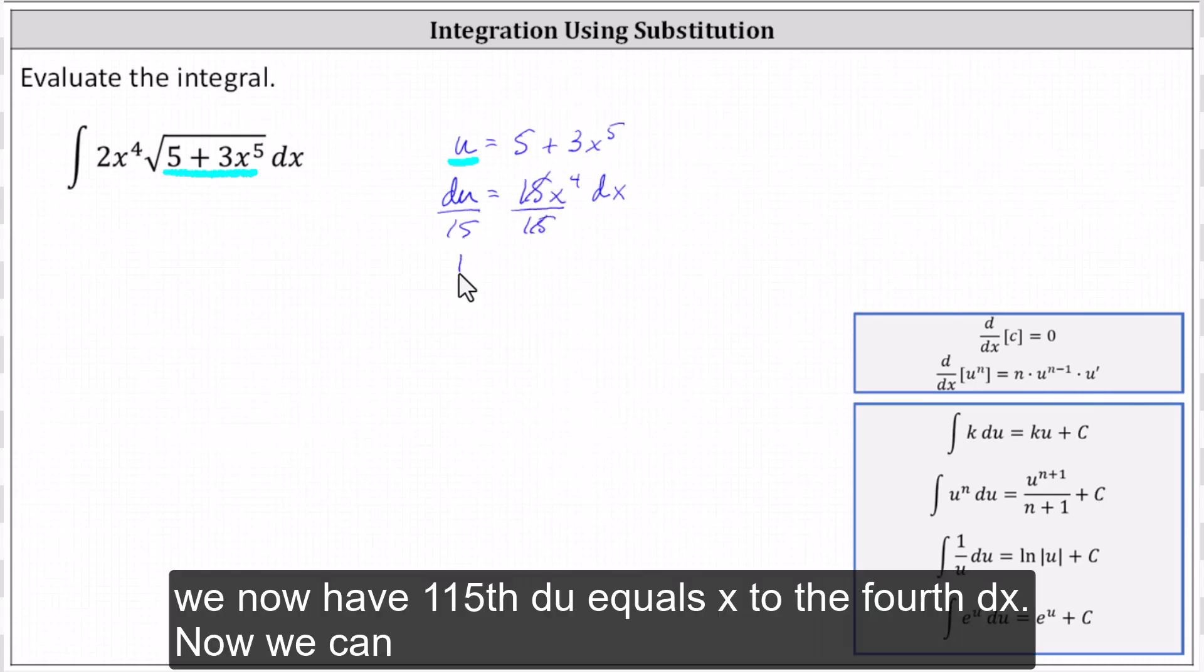Simplifying, we now have 1/15 du equals x^4 dx.